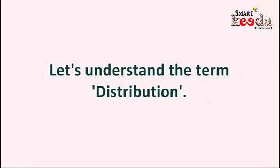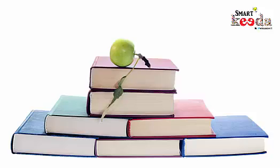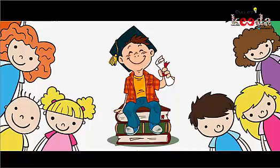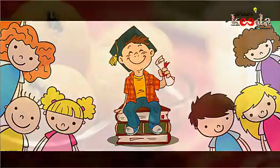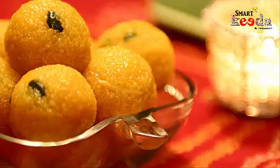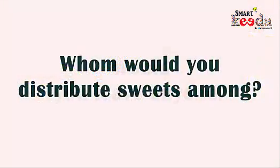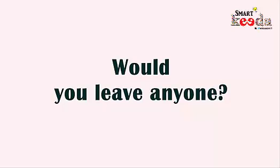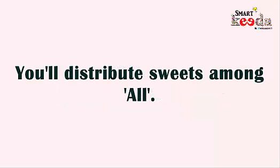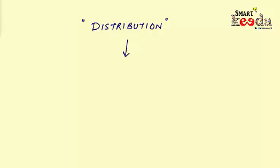Let's understand the term with an example. You are one of the students in a class of 20 students, and one day you get the news that you cracked IBPS PO. So you went on cloud nine and brought sweets for your classmates. Now whom would you distribute sweets among? Would you leave anyone while distributing the sweets? The answer is no — you will distribute the sweets among all the people there. So distribution is denoting 'all', and 'all' is denoting a universal class.